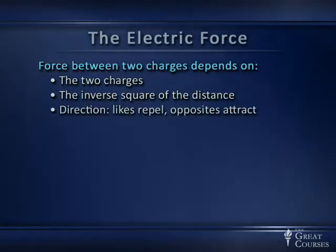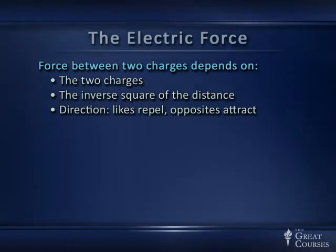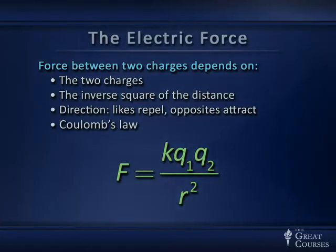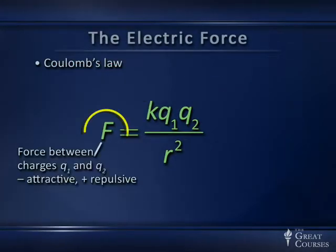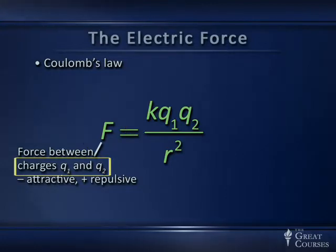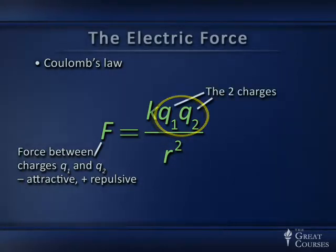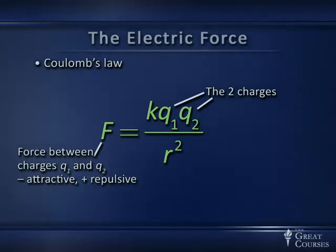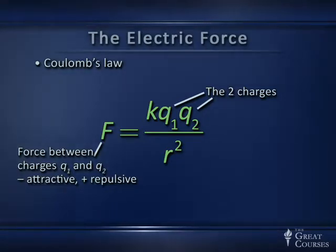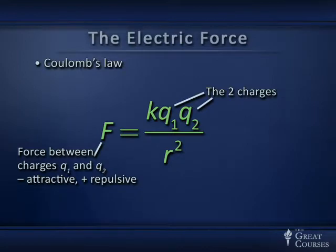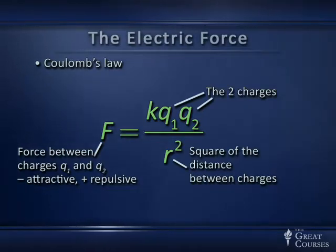The electric force depends on the inverse square of the distance between charged objects; opposites attract and likes repel. Mathematically, the electric force is described by Coulomb's law. On the left of the equation we have the force between two charges, labeled q₁ and q₂. It's negative if the force is attractive, positive if repulsive. Two numbers with the same sign multiply to give a positive result — repulsive. A negative and a positive multiply to give a negative — attractive. The square of the distance between the charges appears in the denominator.